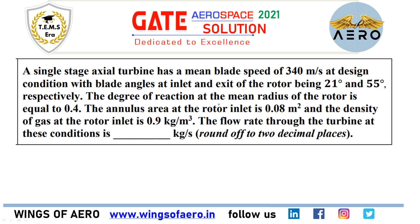The degree of reaction at the mean radius is given. The annular area at the rotor inlet is given. The density is also given. And you need to find out the mass flow rate flowing through the turbine at this condition. They have given all the other factors.